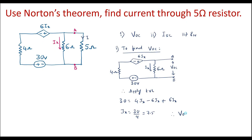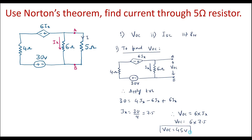Therefore VOC = 6·Ix = 6 × 7.5 = 45 volts. So the open circuit voltage VOC is 45 volts.